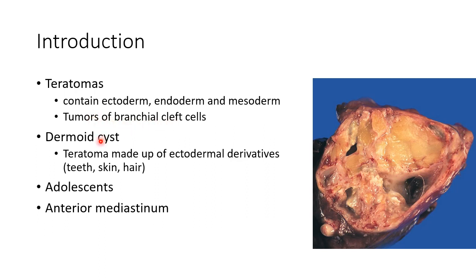A dermoid cyst is a teratoma made up of ectodermal derivatives like teeth, skin, and hair. This picture shows a mediastinal dermoid cyst. Dermoid cysts usually occur in adolescence and are usually found in the anterior mediastinum.